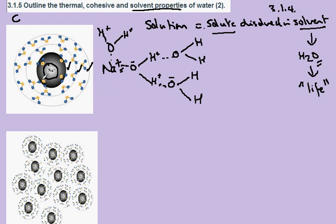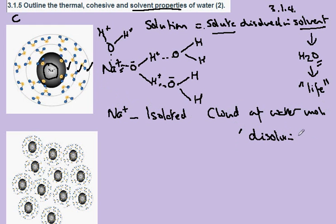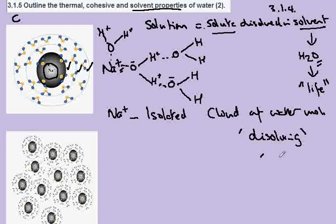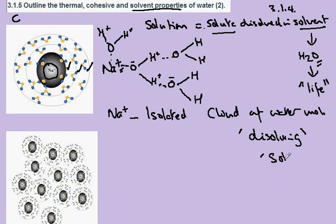But the important thing to notice is that the ion, the sodium ion, has been isolated by the cloud of water molecules around it. This is what we mean by dissolving. This is what we mean by the property of being a solvent.